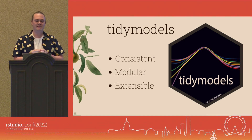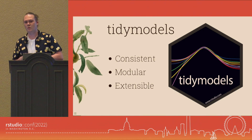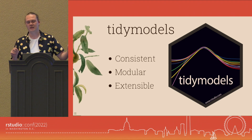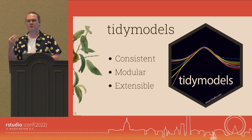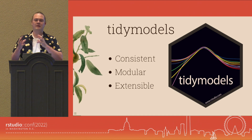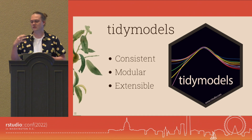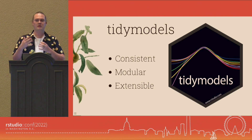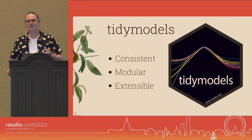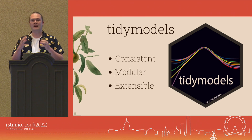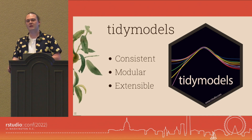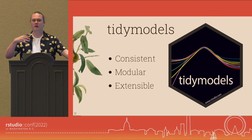It's modular in the sense that instead of having one monster function that does a bunch of preprocessing, fits a model inside a cross-validation fold, and finds the most optimal model according to some heuristic, we instead create smaller objects that we can then bind together, allowing us to easily swap out and build a more complete workflow. And lastly, and for me most importantly, is the idea of extensibility.